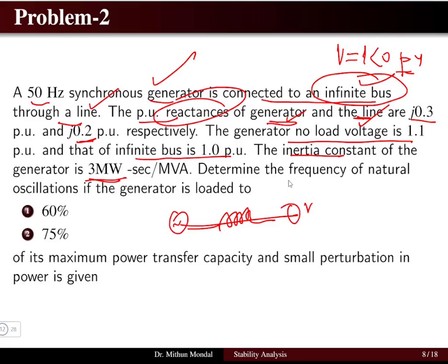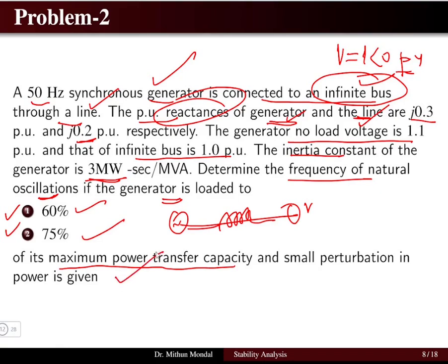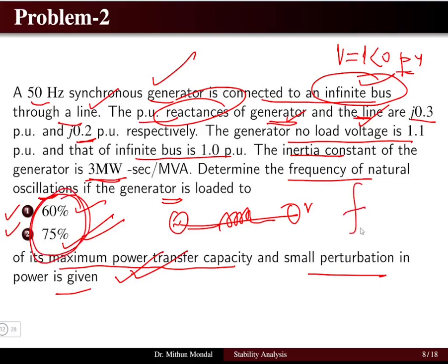We need to determine the frequency of natural oscillations when the generator is loaded at two conditions: 60 percent and 75 percent of its maximum power transfer capacity, given a small disturbance in power.